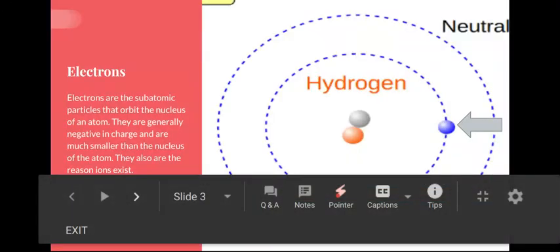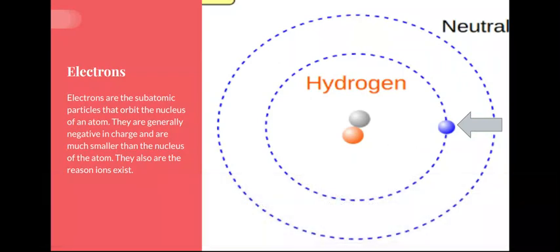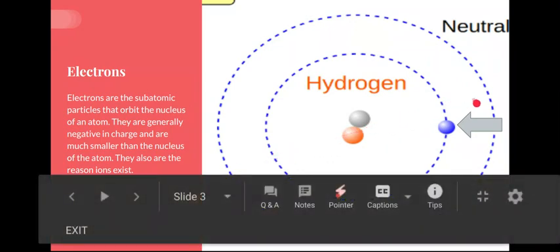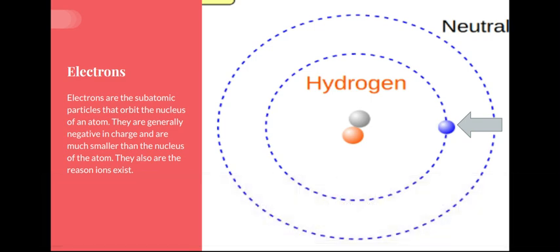Electrons. Electrons are subatomic particles that orbit the nucleus of an atom. They are generally negative in charge and are much smaller than the nucleus of an atom. They are also the reason I don't exist. So, you see here, this is an electron right now orbiting. And please do watch the ions video I made in the description down below if you want to learn more about them.